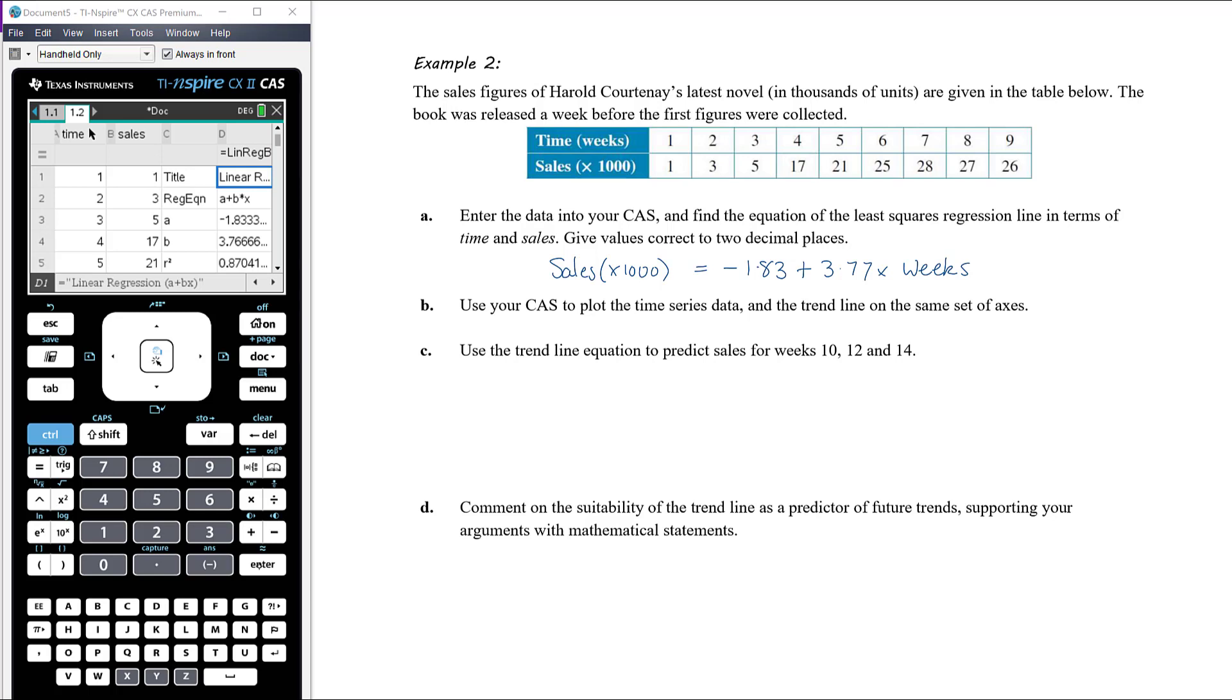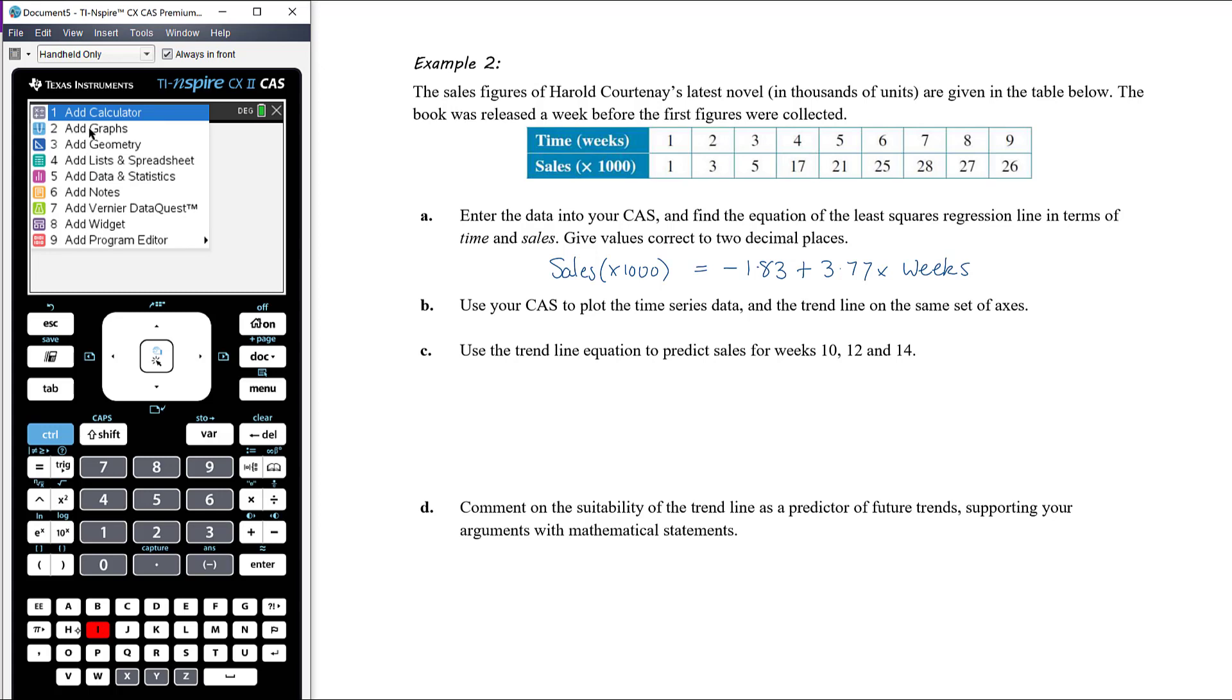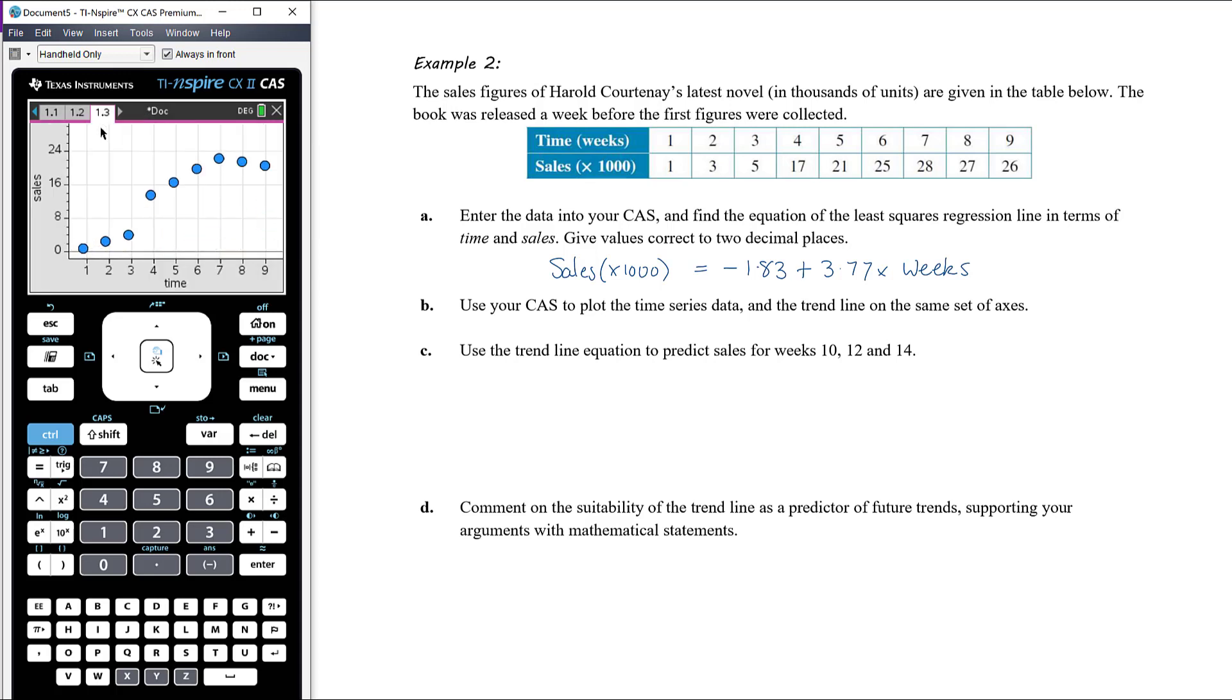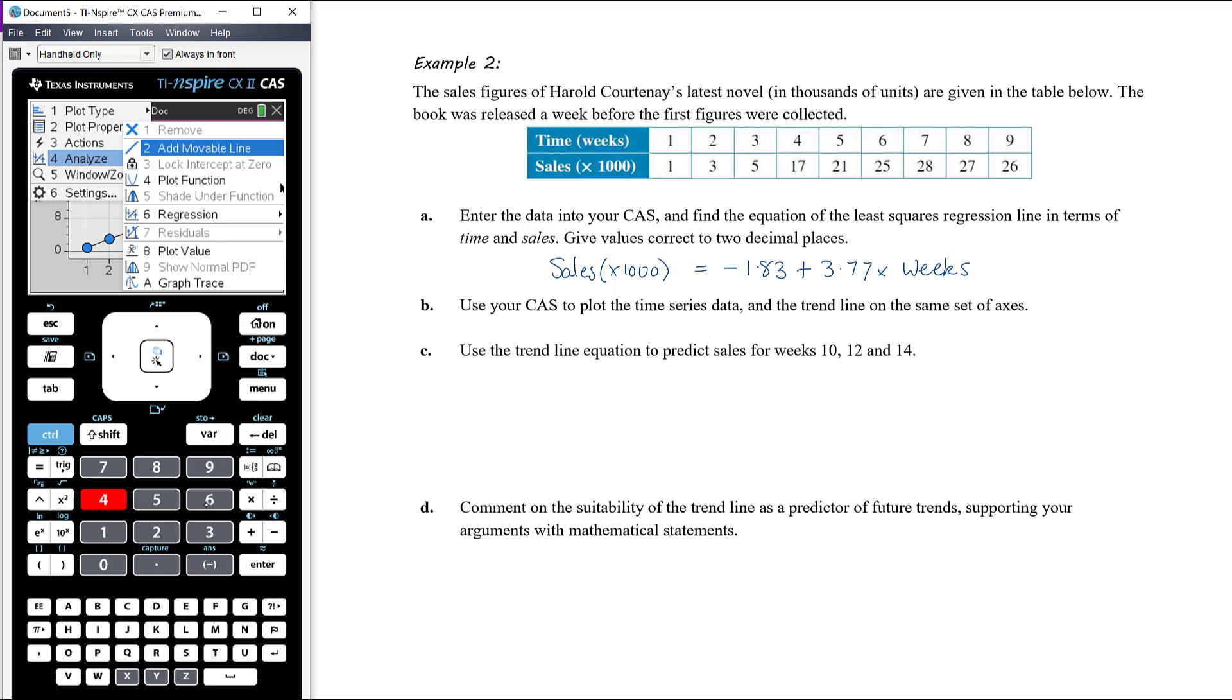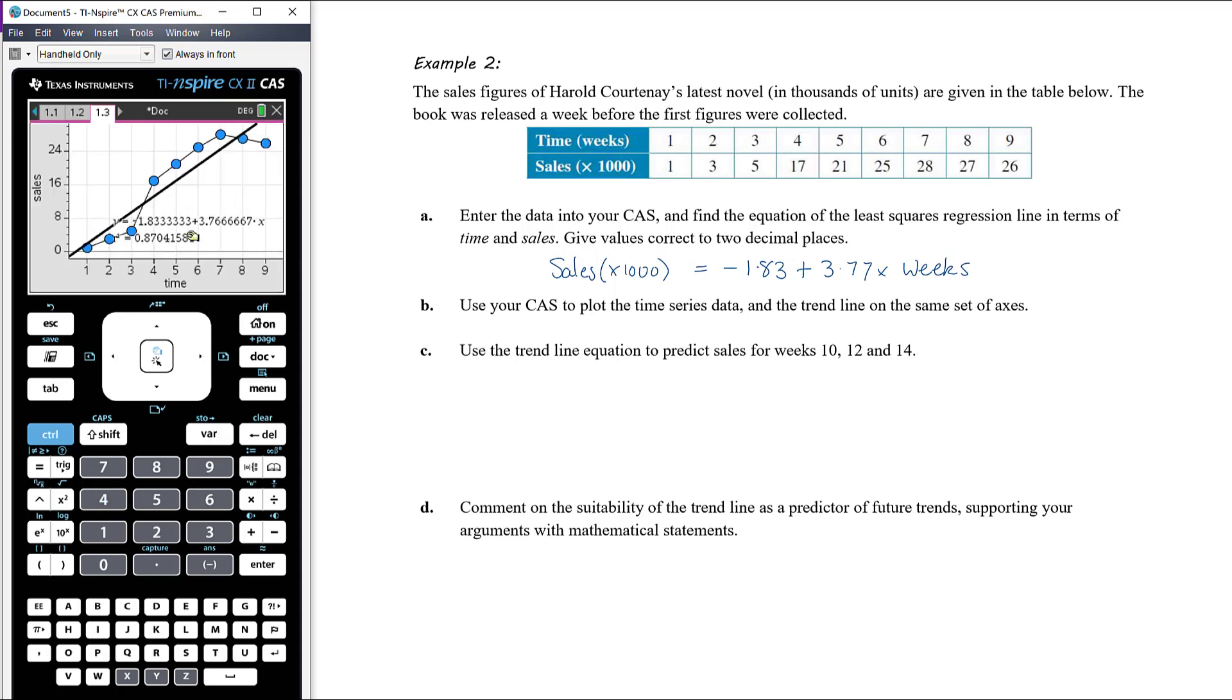Use your CAS to plot the time series data and the trend line on the same set of axes. So let's insert data and statistics page. Let's put our time on the horizontal axis and let's put our sales on the vertical axis. Time series plot, so let's connect those points. I didn't mean to choose zoom. I meant number two. And then plot the trend line. So do the regression here. So same as we do for a scatter plot, menu 4, 6, 2. There's my trend line, and we're seeing it's the same equation that we found in the spreadsheets page.